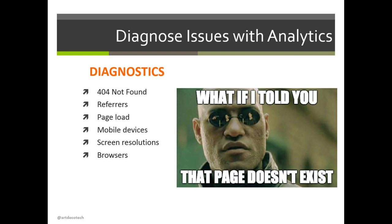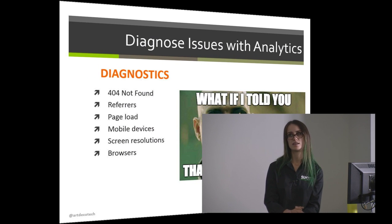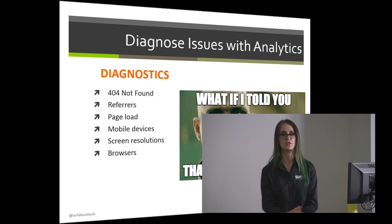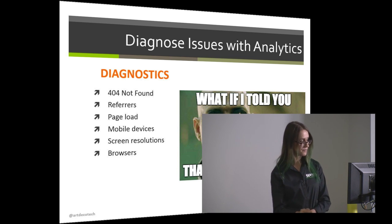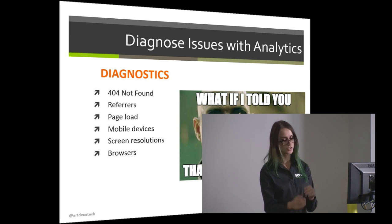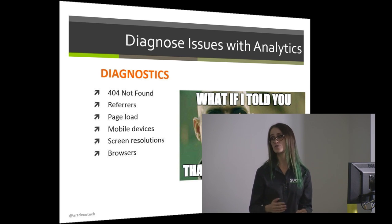For diagnostics, there are a bunch of different issues we can find in Google Analytics. We can see if there's bad referral spam — people trying to link to your website or use your UA code. We can look at page load speeds and lots of different metrics. Once you get into custom reports, you can choose dimensions and metrics and look at things like mobile devices, operating systems, browsers, and screen resolutions — stuff that's really important for web designers and developers.